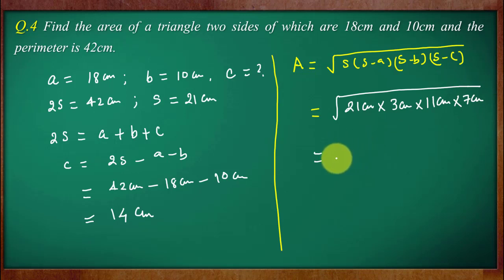If you multiply the quantities under the root, it comes to 4851 centimeter to the fourth. And further if you simplify this it comes to 21 root 11 centimeter square.